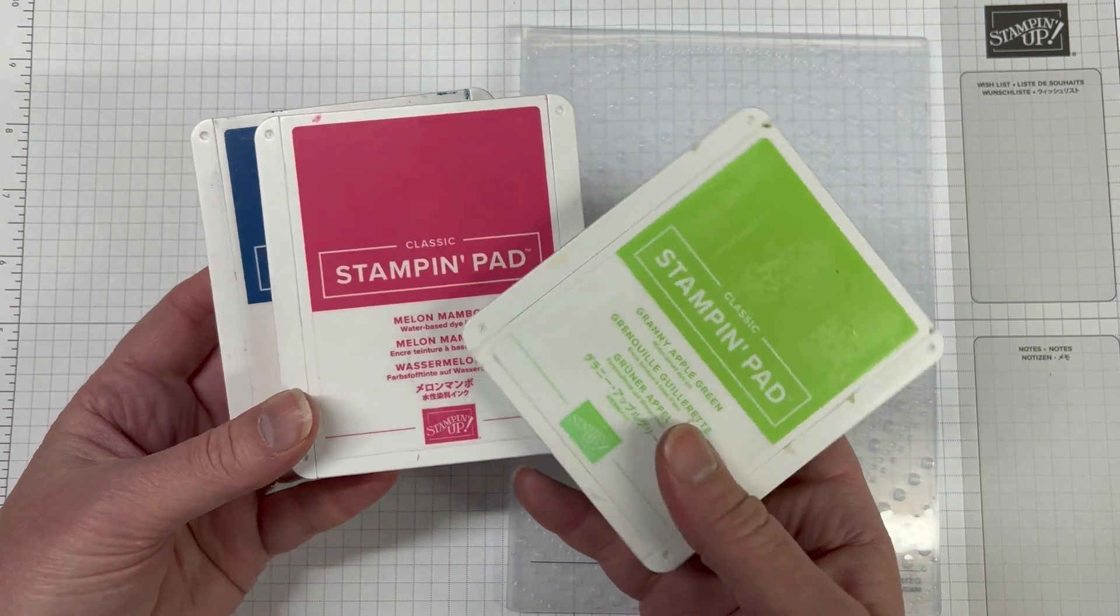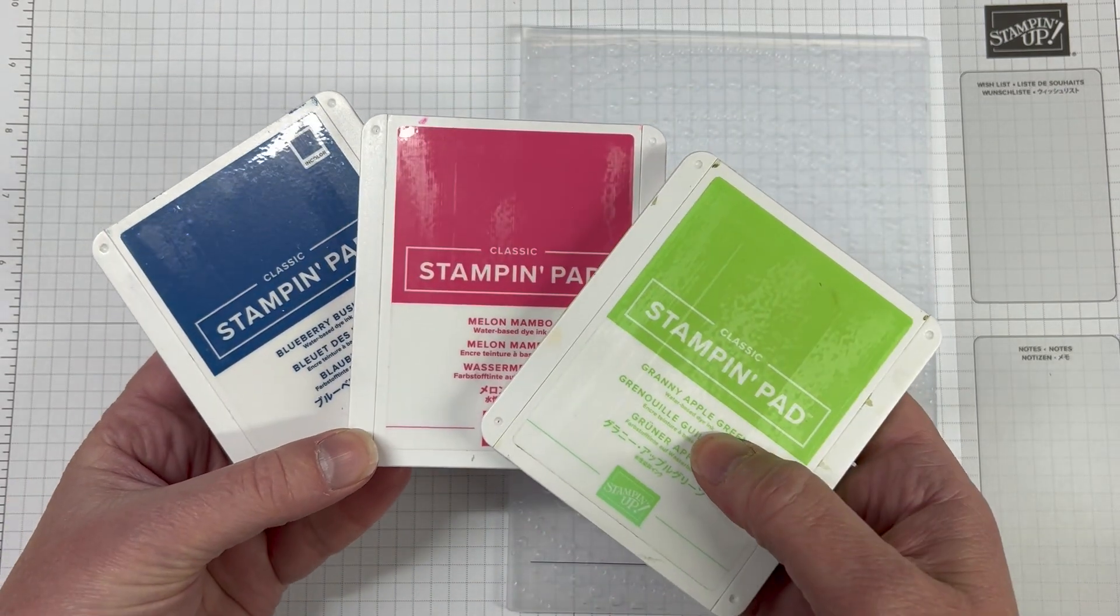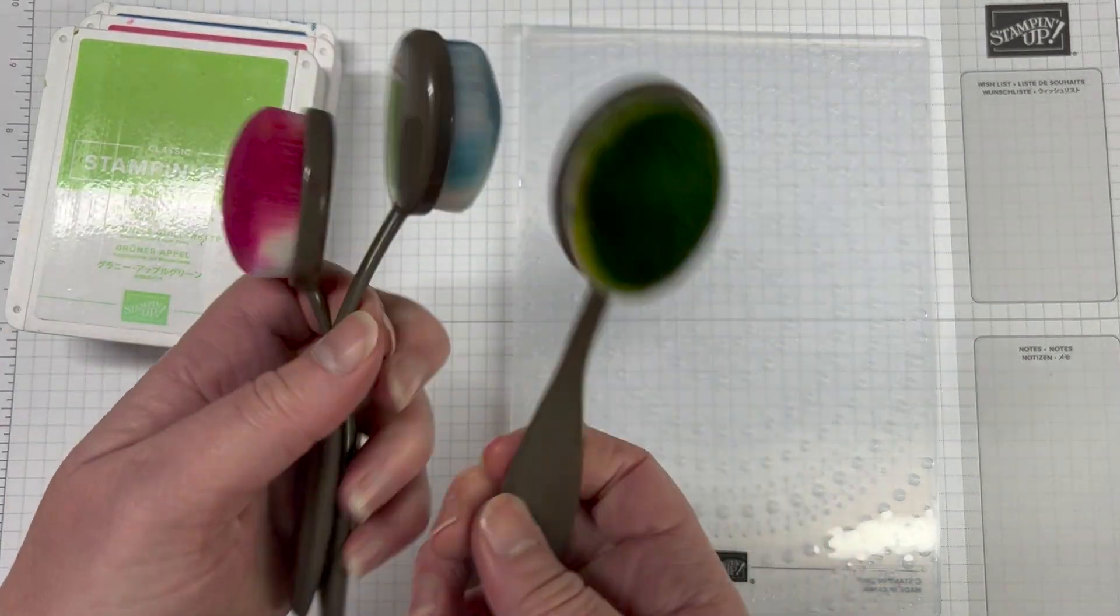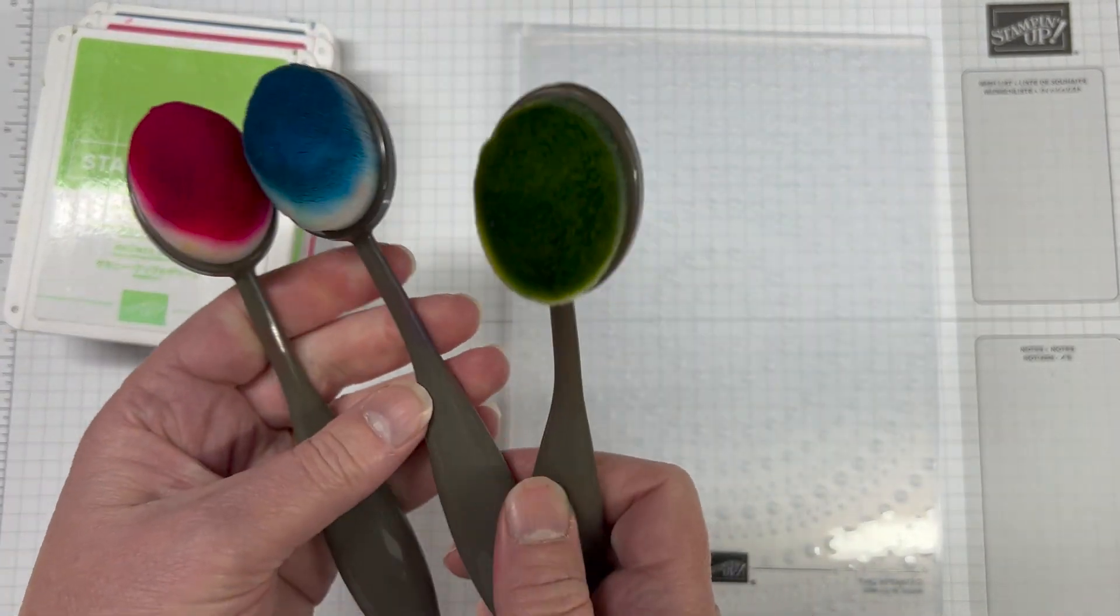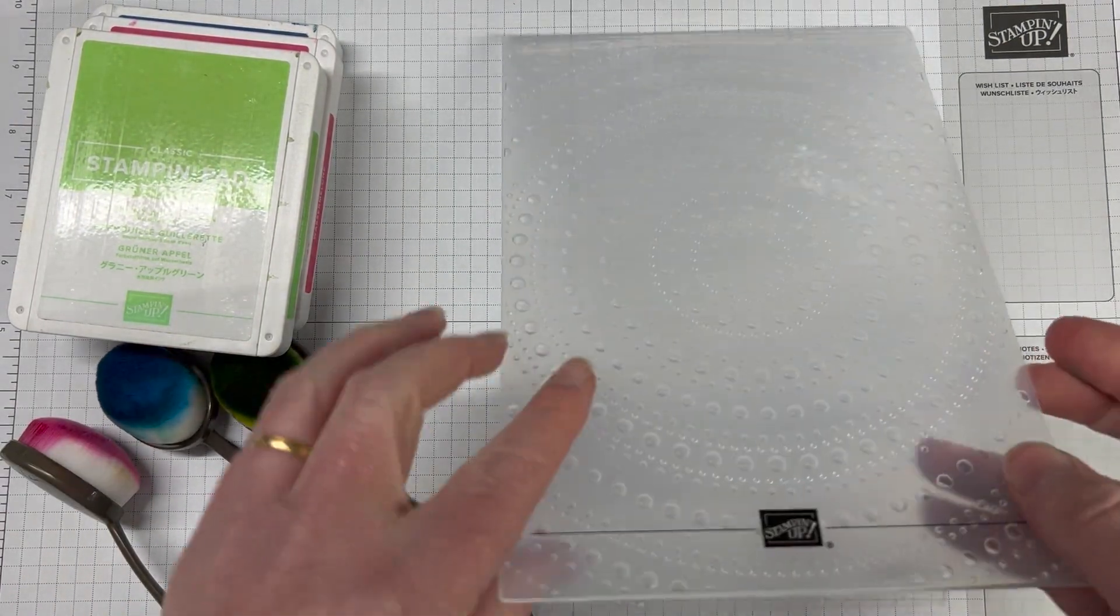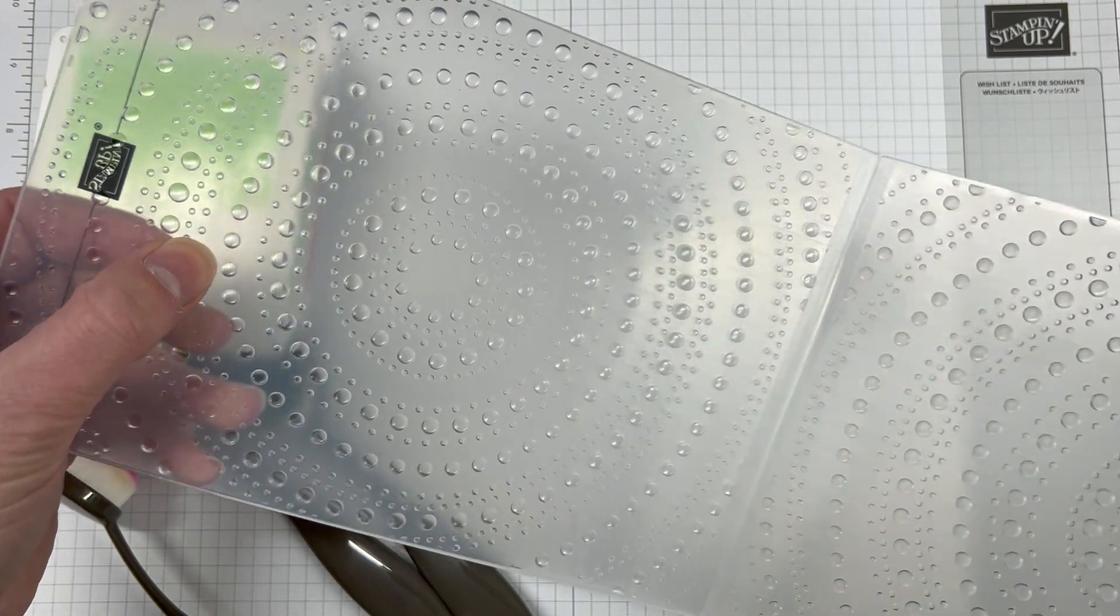So this week's theme is technique. You can use any technique that you would like and create a card. I'm using the new Dotted Circles 3D embossing folder. It's huge and new in the catalogue on page 129. The inks I have are Blueberry Bushel, Melon Mumbo and Granny Apple Green, and I'm using the Blending Brushes.